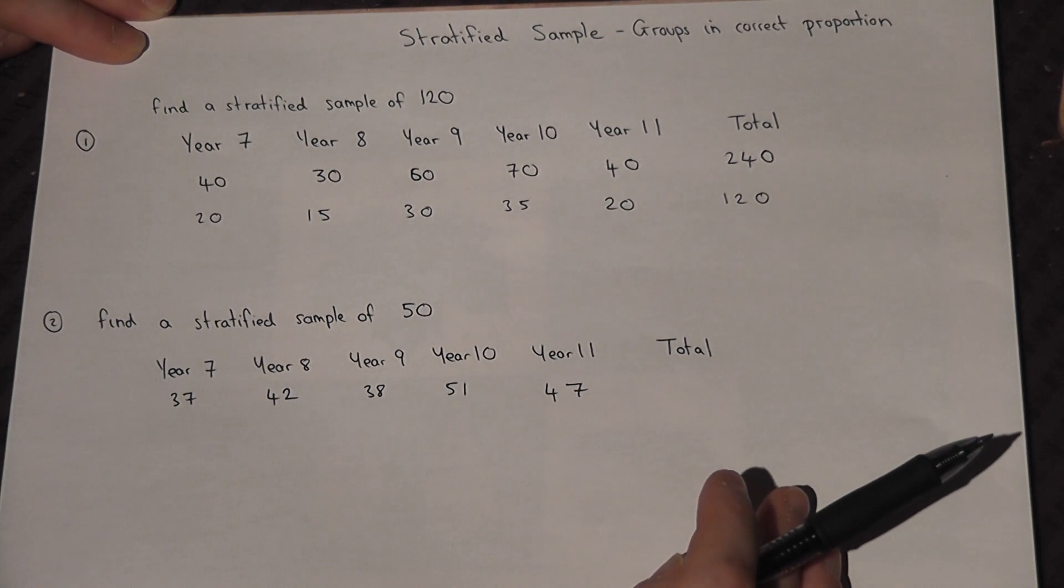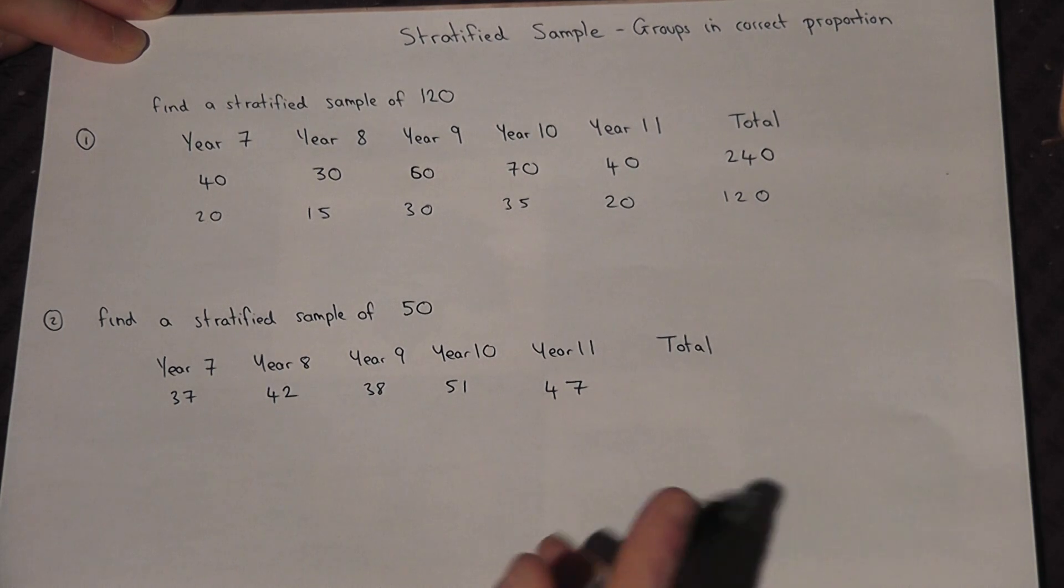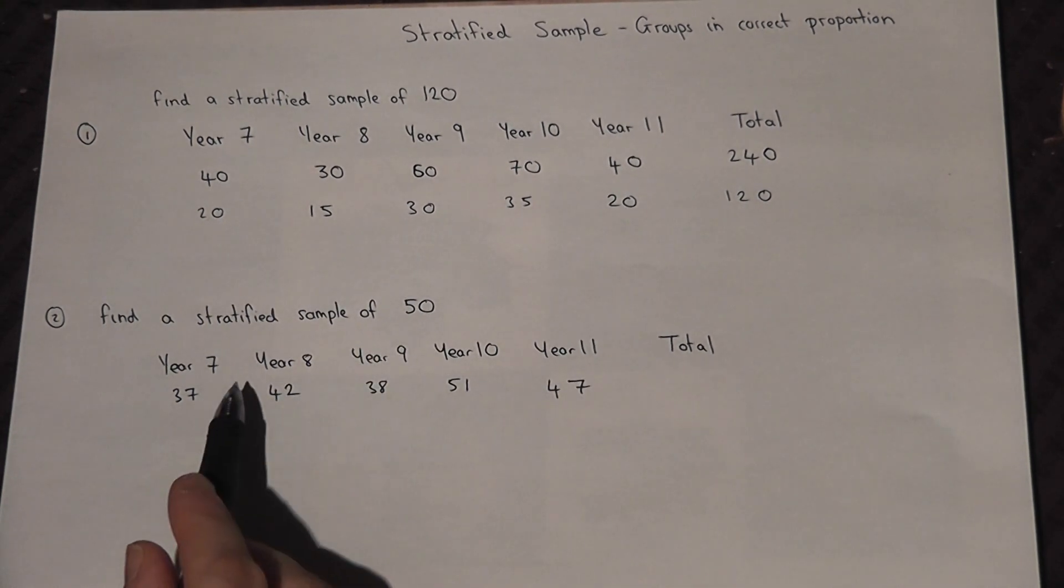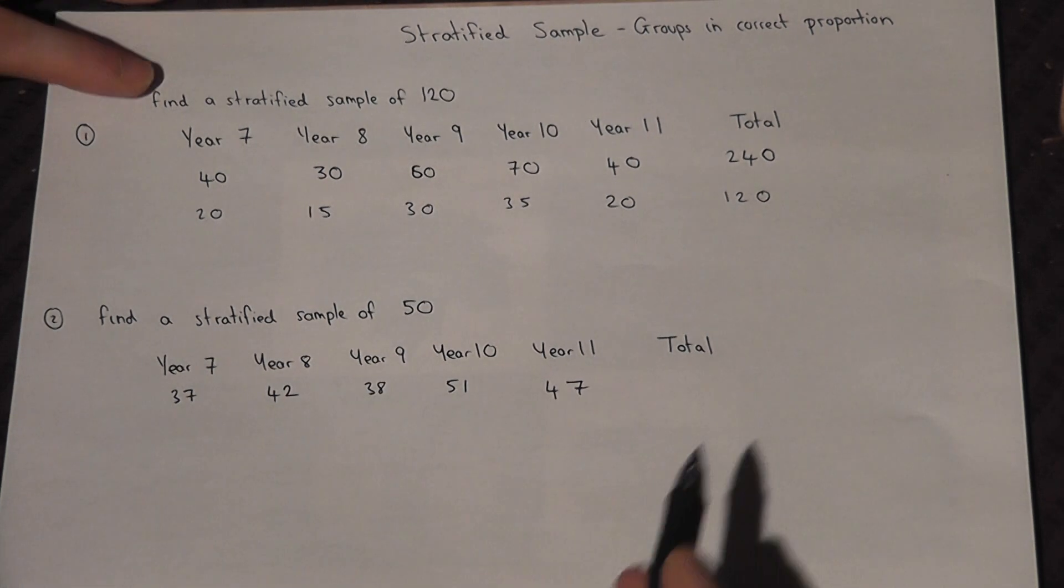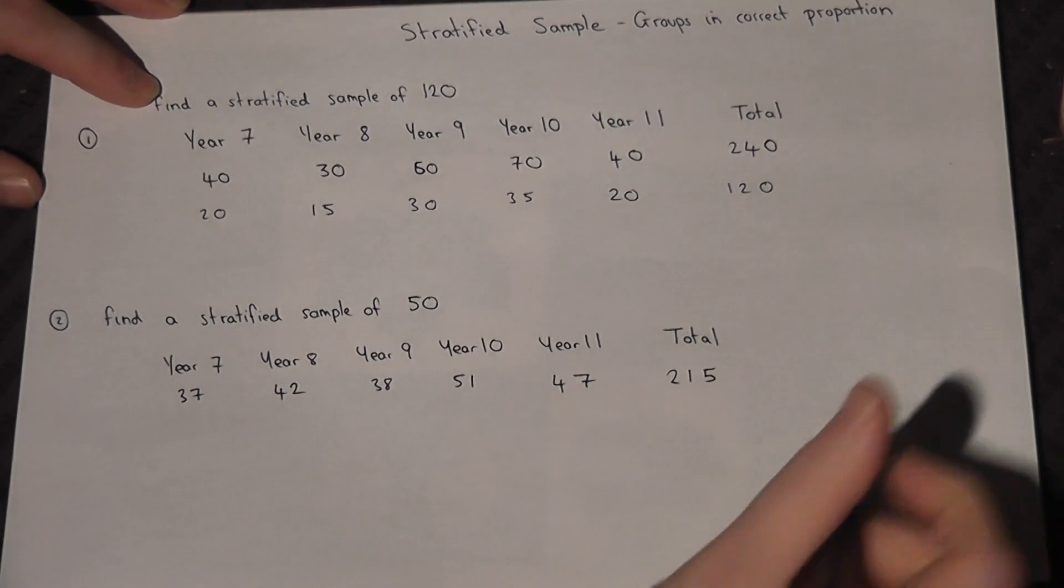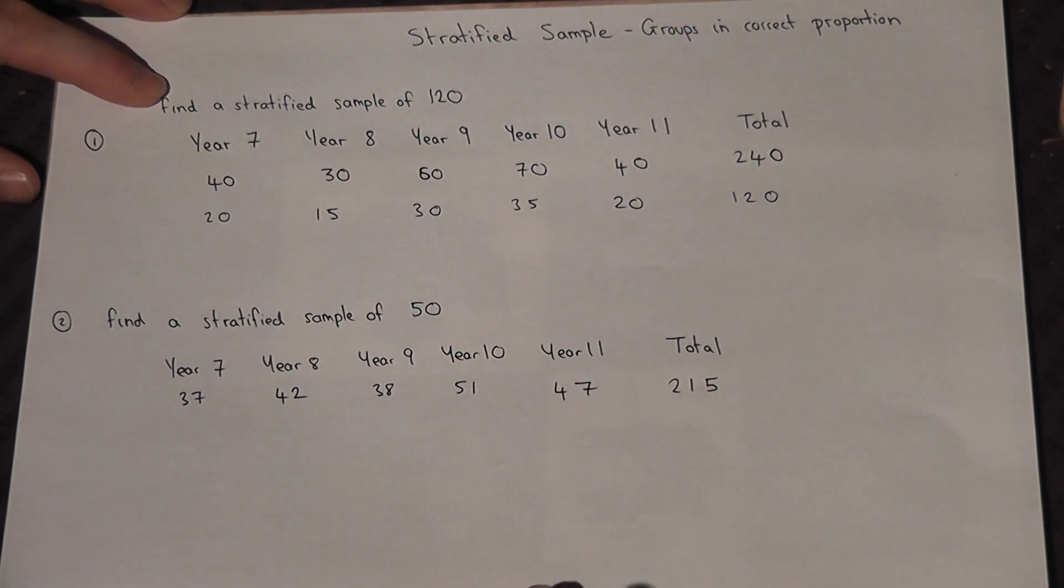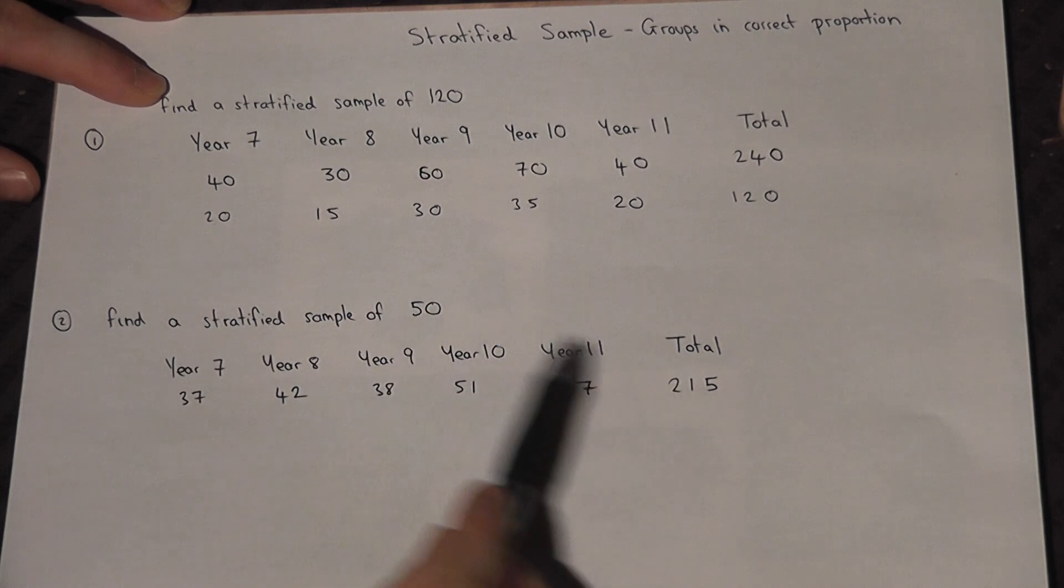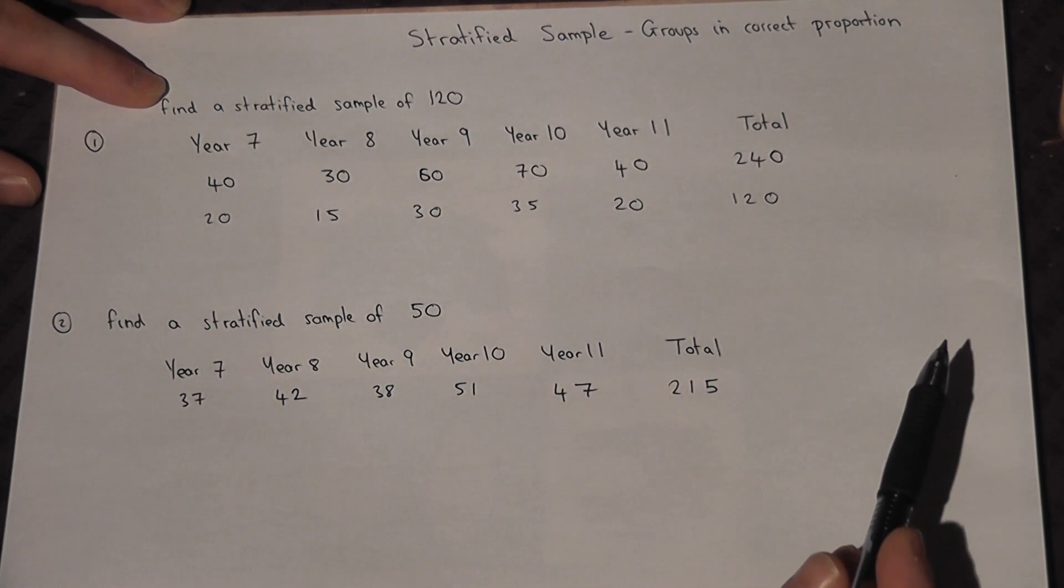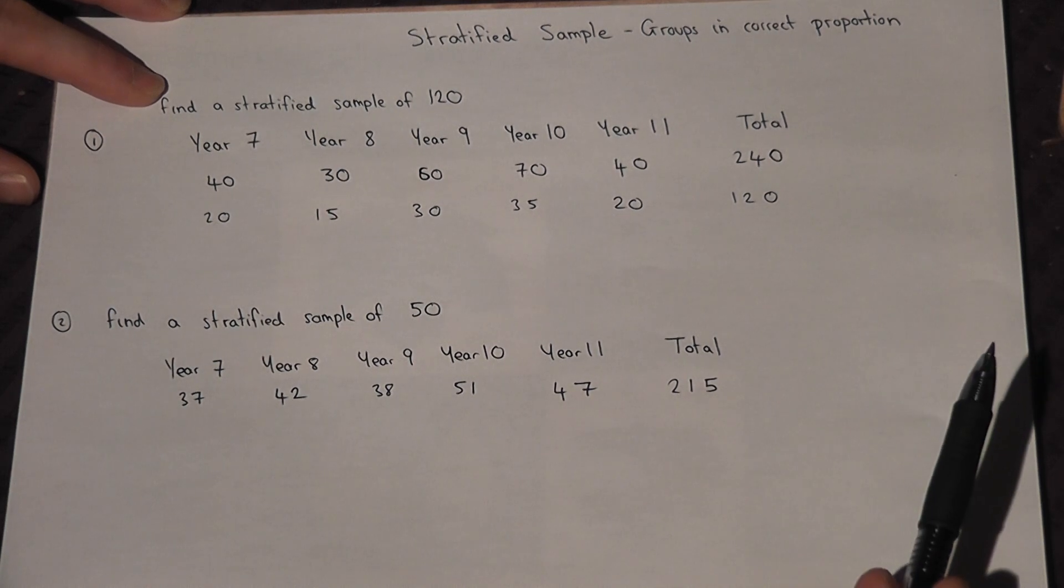Now in the second example, if I add up the pupils in all the year groups there are 215 in total, but I want a sample of 50. Now it's not as obvious this time what's actually happened, so here's a way of doing it on a calculator which is really quite simple.